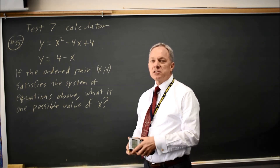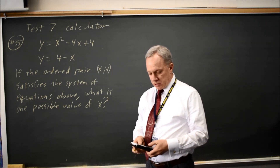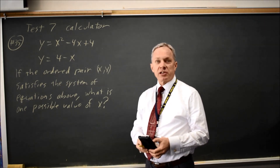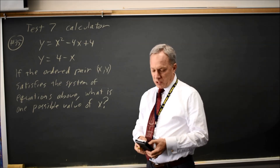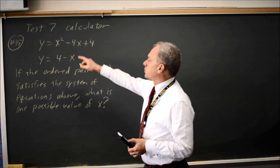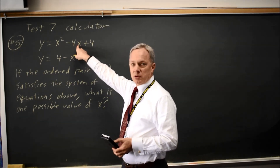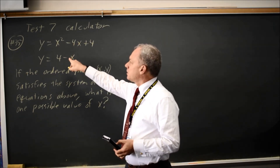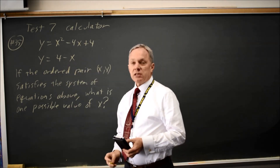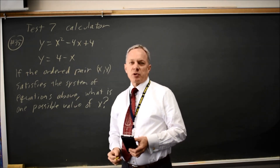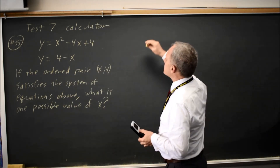Since this is a calculator section, the easiest way is to graph it on your calculator. Go to y equals and put x squared minus 4x plus 4 into y1. Go down to y2 and put in 4 minus x. Hit graph in the standard window, zoom 6.